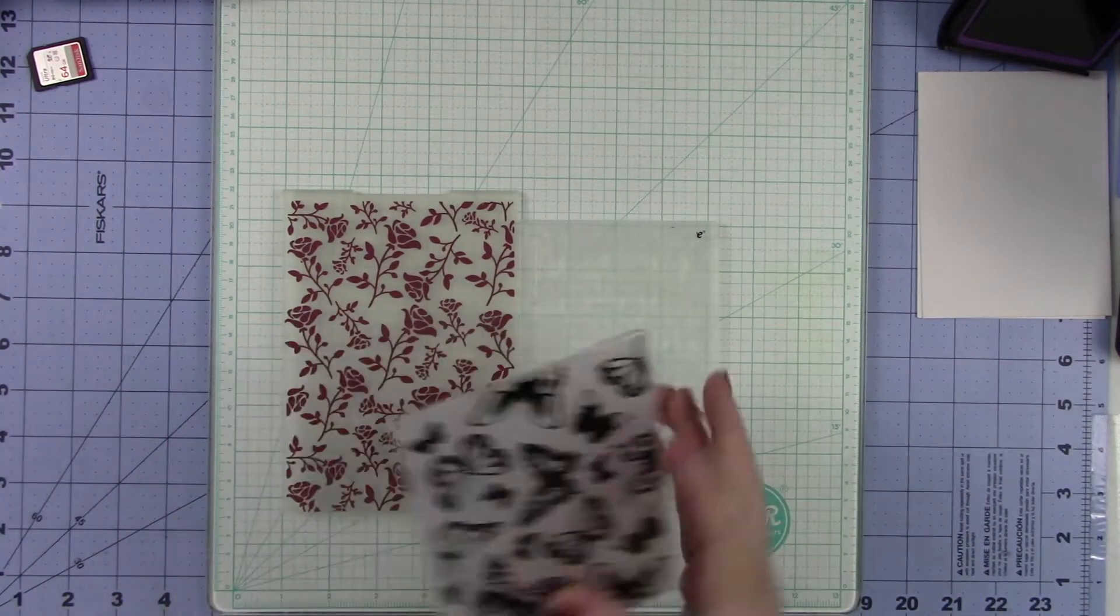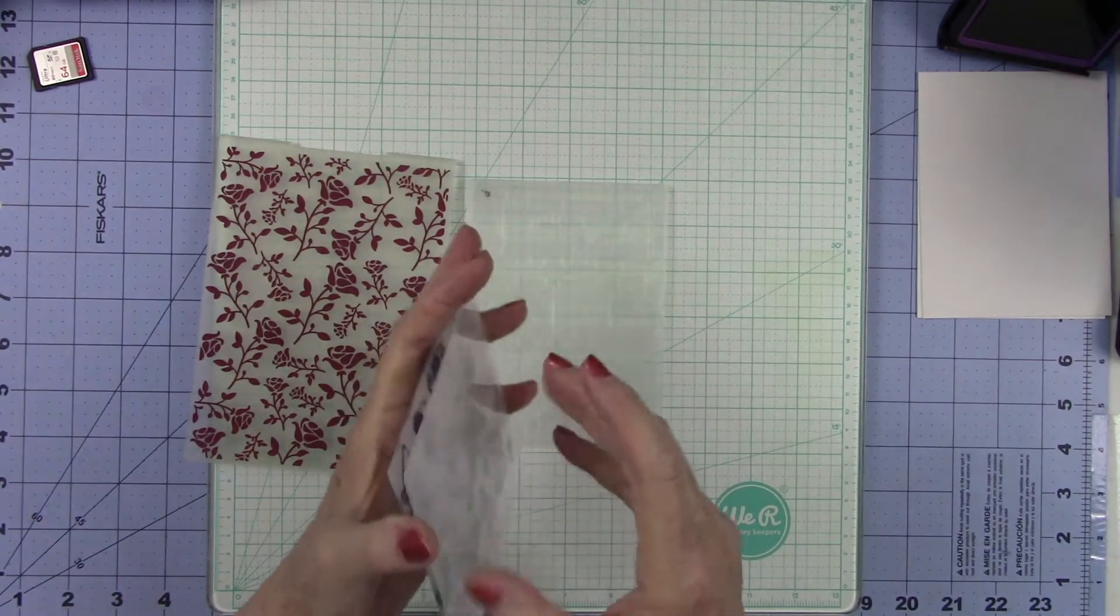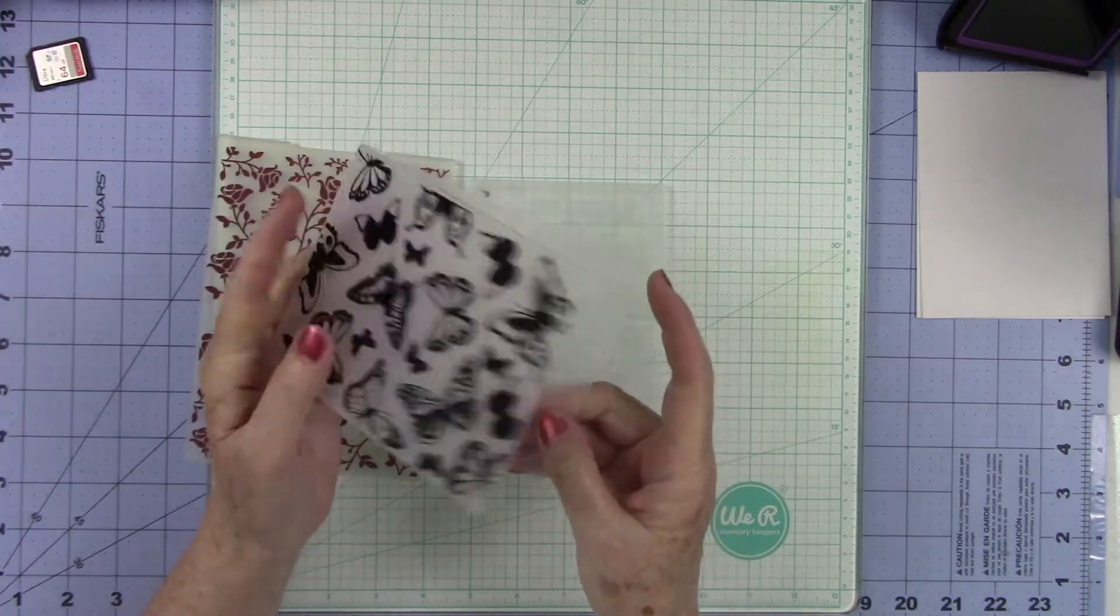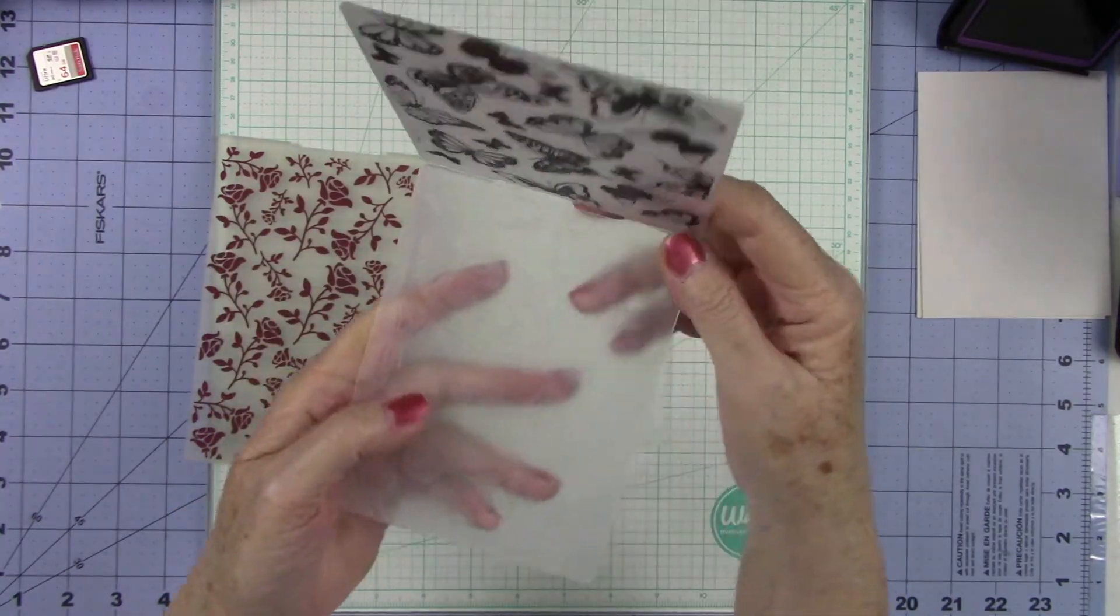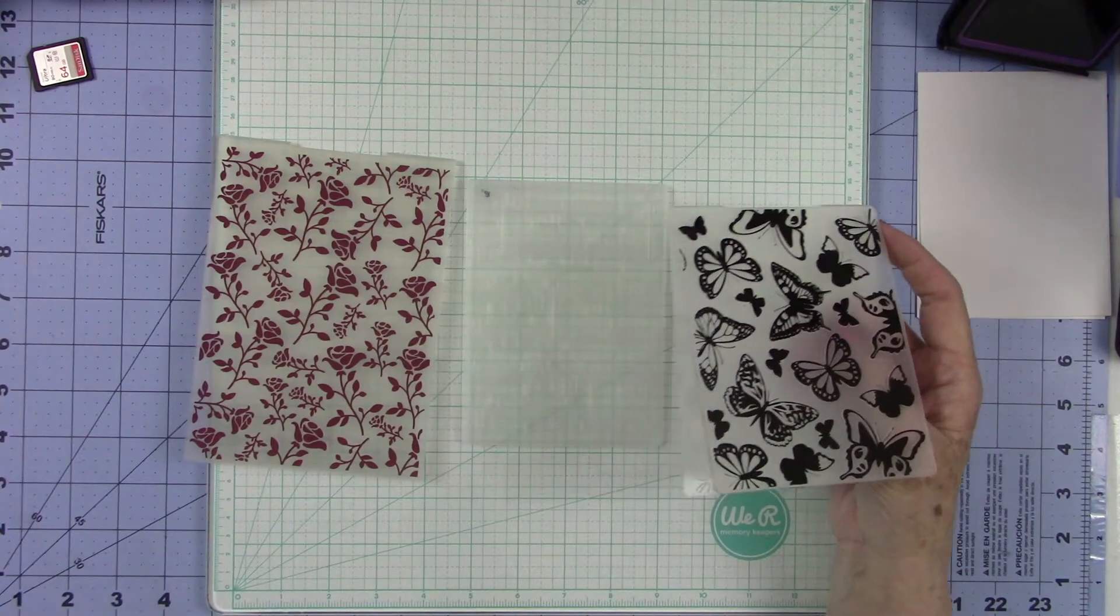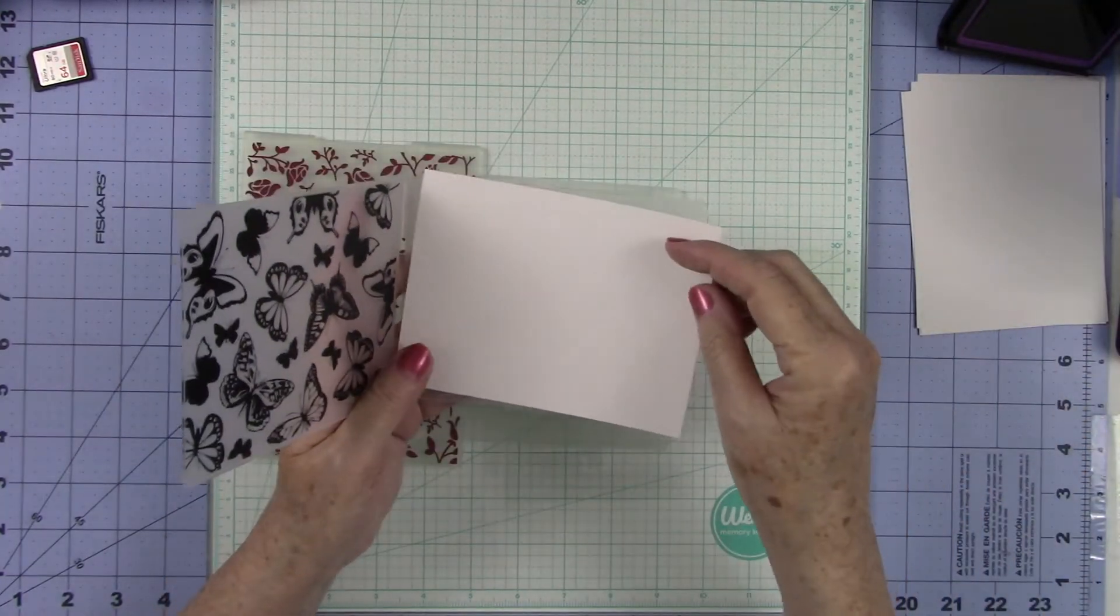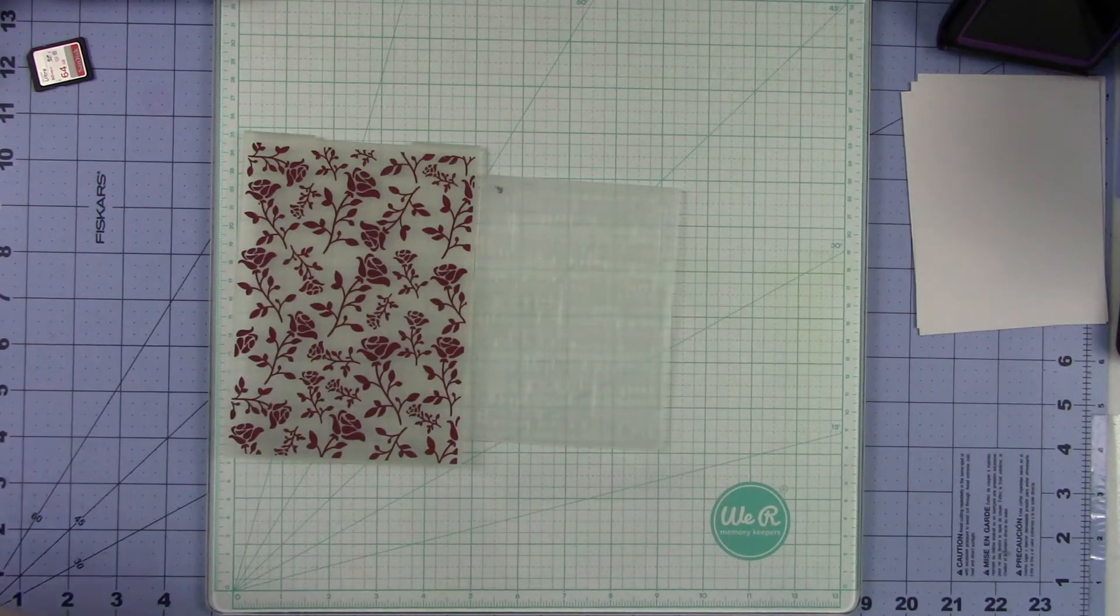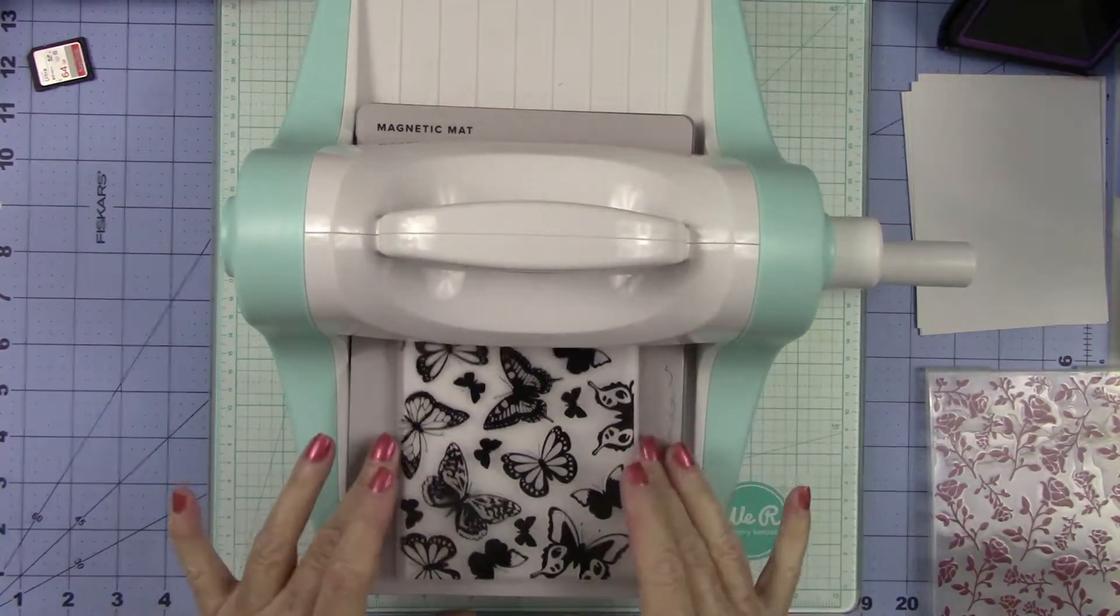Today I thought that we would look at embossing folders. Everybody knows what embossing folders are. They are these little plastic folders that have a raised up area, one side is more raised than the other, and when you put your paper in between them it presses that indentation into your paper. So you put your paper in, you run it through a die cut machine or embossing machine like my Revolution.